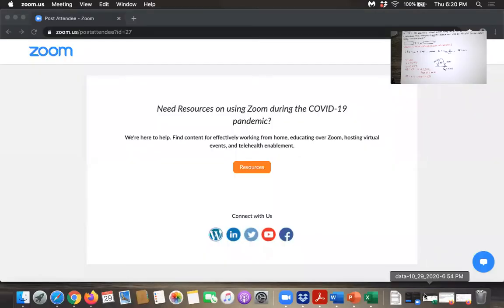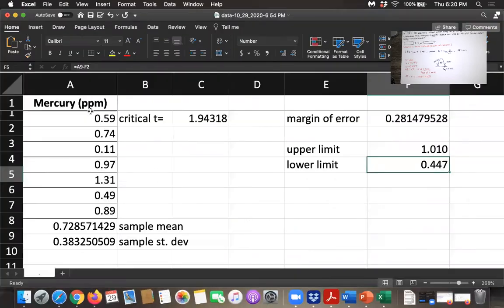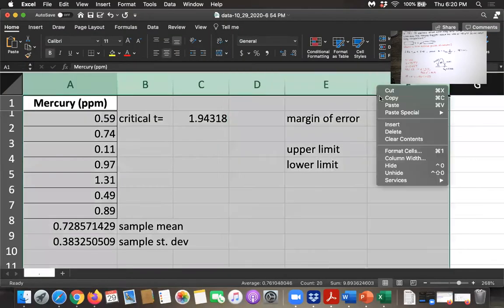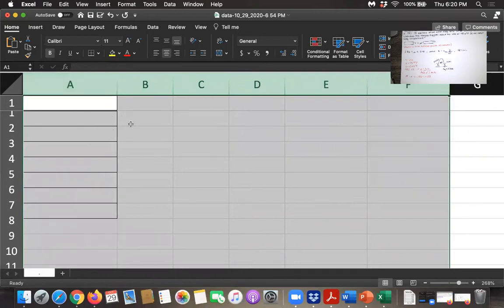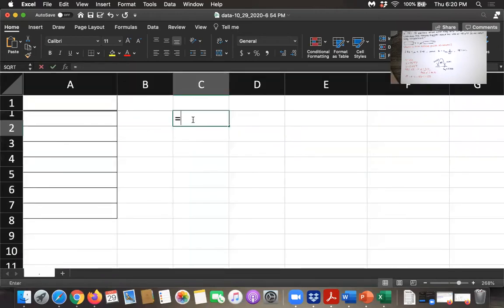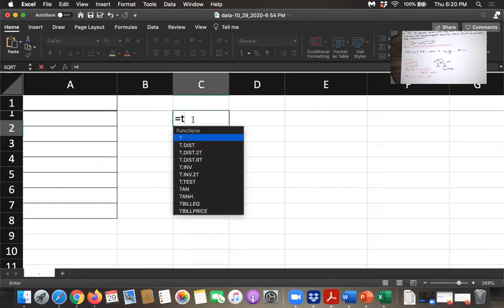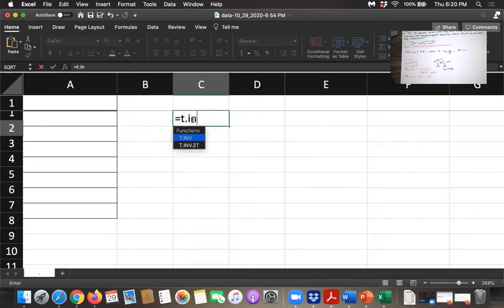I'll share my screen with you. This is data from a different problem, so let's clear that out. Now I want to find the T score that goes with area in two tails of 0.01 and 105 as my degrees of freedom. We're going to use T.INV.2T because I want area in two tails.